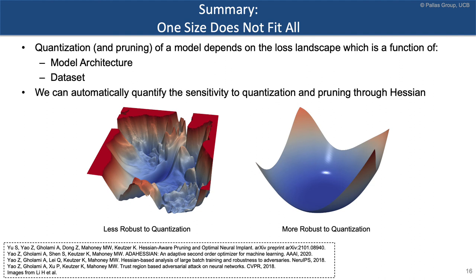In summary, the basic idea is: one size does not fit all. When doing quantization for a particular neural network, we have to look at the sensitivity of the network layers, which is a function of the model architecture as well as the dataset. We can automatically quantify sensitivity to quantization and to pruning using the Hessian — we have applied this same idea to pruning in a paper called 'Hessian Aware Pruning and Optimal Neural Implant,' removing only the completely insensitive blocks.